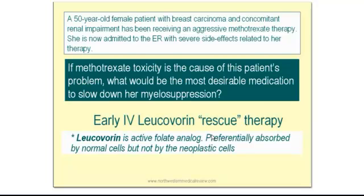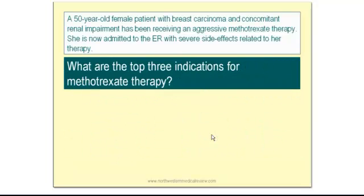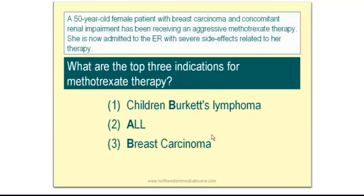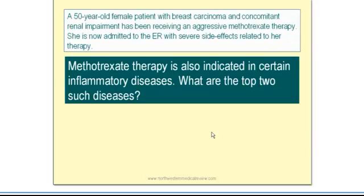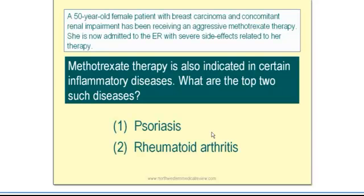What are the top three indications for T-Rex therapy? The top three indications would be breast cancer, Burkitt's lymphoma in children, and ALL leukemia — which stands for acute lymphoblastic leukemia. T-Rex therapy is also indicated in some inflammatory conditions; the top two such conditions are rheumatoid arthritis and psoriasis.